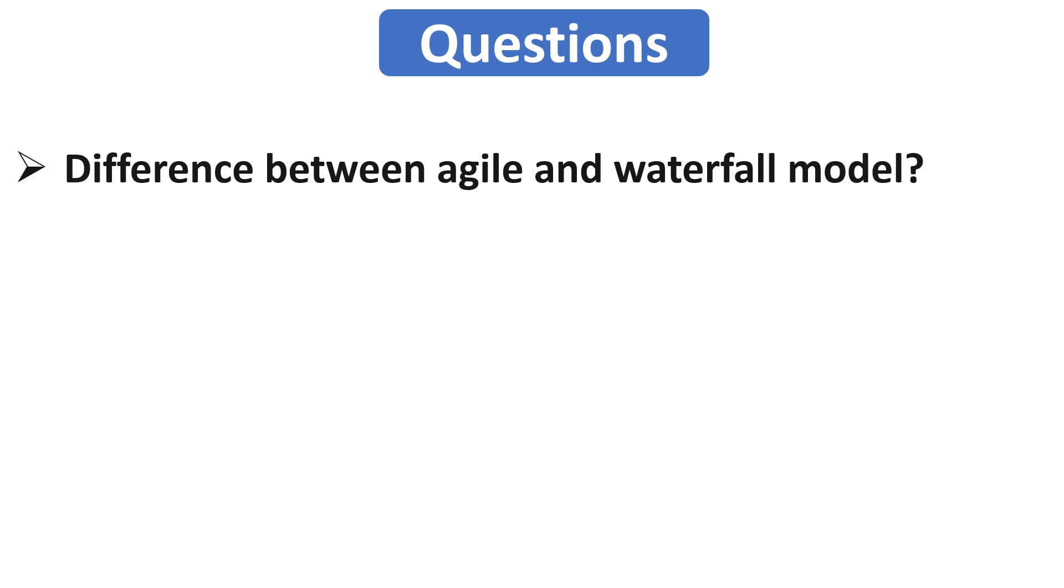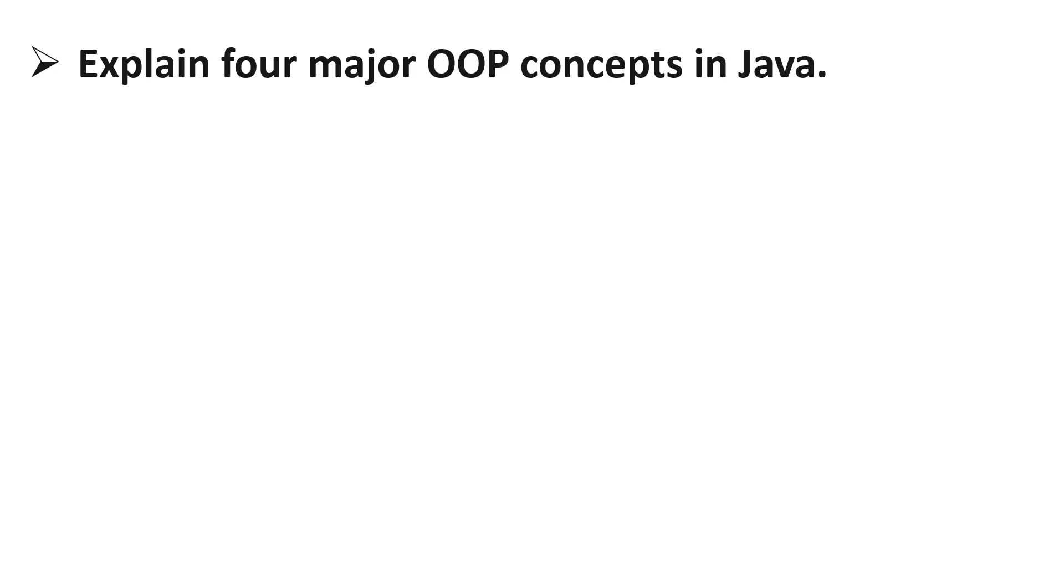Now our next question is: explain 4 major object oriented programming concepts in Java. To answer this question you can start by giving a small definition of object oriented programming. Then you can specify the 4 major concepts which are encapsulation, abstraction, inheritance and polymorphism.